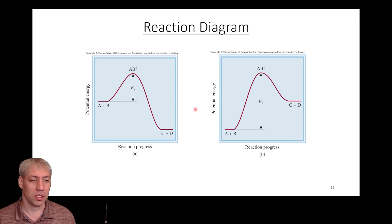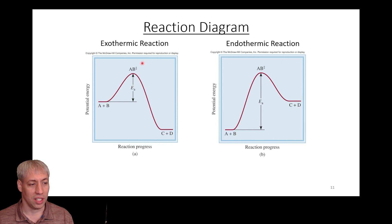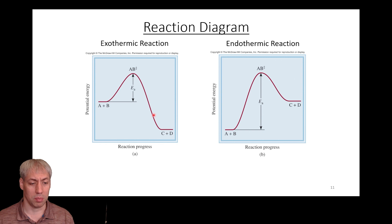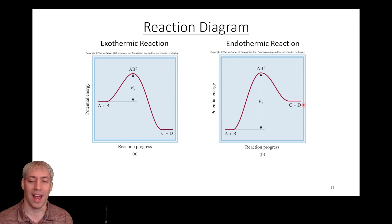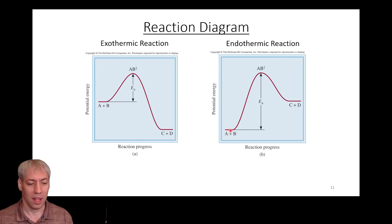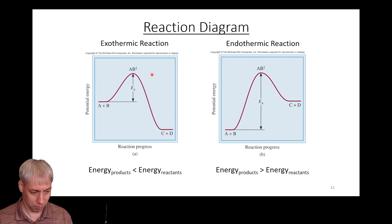Here are two versions of reaction coordinate diagrams. An exothermic reaction shows reactants at higher energy than products — energy is released as the reaction progresses (delta H is negative). An endothermic reaction is the opposite: going from reactants to products is energetically uphill, meaning you must put in more energy than you get back. In an exothermic reaction, you get more energy out than you put in; it depends on the energy relationship between reactants and products.